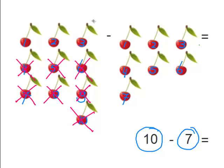So how many cherries are we left with then? Yes, 3 cherries. Therefore, 10 minus 7 is 3.